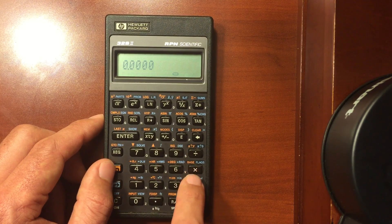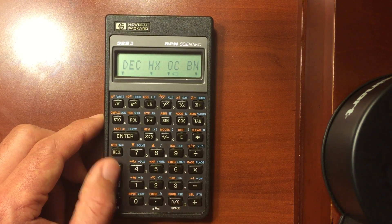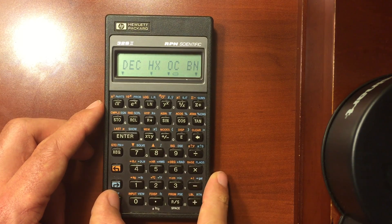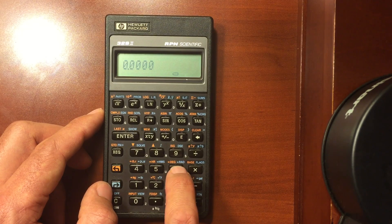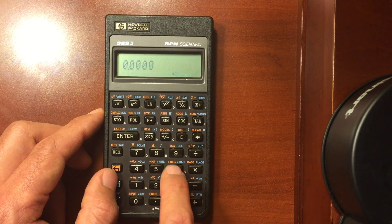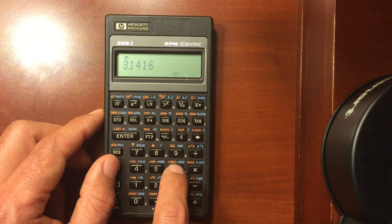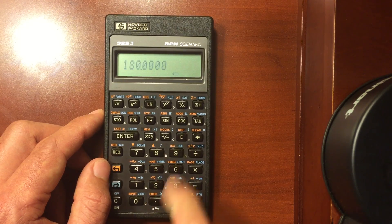You can change basis: decimal, hexadecimal, octal, binary. You can switch between degrees and radians, convert those on the fly. So you know, pi converted to degrees is 180 degrees.